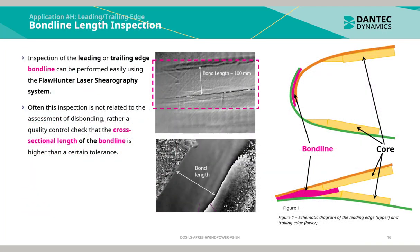The bond line length inspection of the leading and trailing edge: inspection of the leading or trailing edge bond line can be performed easily using the floor hunter laser shearography system. Often this inspection is not related to the assessment of disbonding, but rather a quality control check that the cross-sectional length of the bond line is higher than a certain tolerance. The top phase map image is that of the leading edge; the bottom phase map image is a representation of the trailing edge.